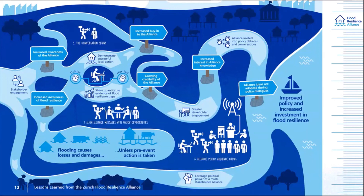Clear examples of what it means to build flood resilience in useful ways for communities on the ground are really powerful tools in influencing policy and spending. This in turn leads to gaining credibility within the Alliance, increased buy-in to what we're doing, and interest in inviting us into policy dialogues. More people come to talk to us, they invite us to speak, and eventually that has led to increased policy influence and more investment.